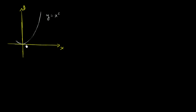Over here, I've drawn part of the graph of y is equal to x squared. What we're going to do is use our powers of definite integrals to find volumes instead of just areas. So let's review what we're doing when we take just a regular definite integral. If we take the definite integral between 0 and 2 of x squared dx, what does that represent?